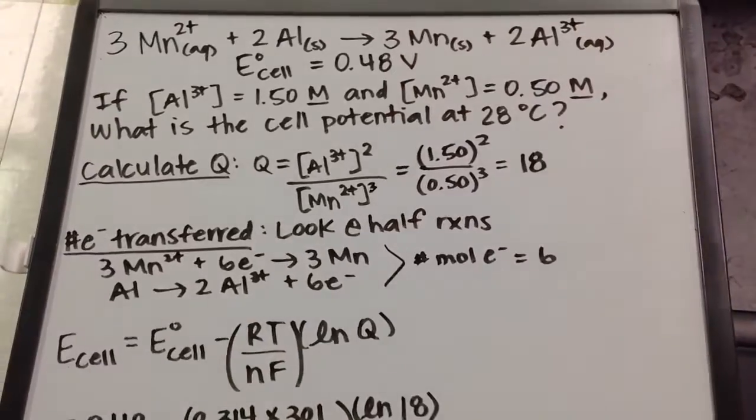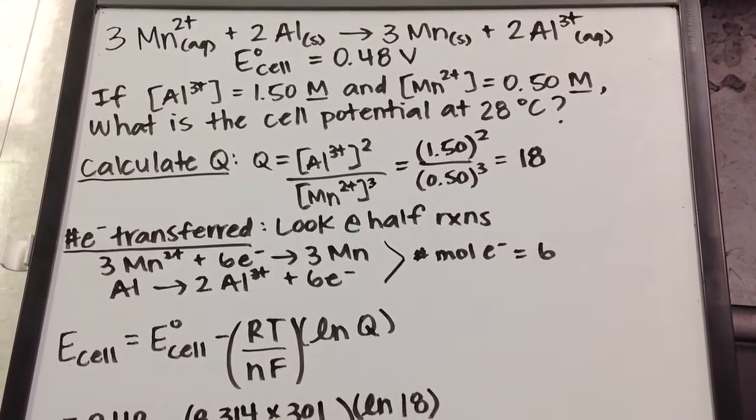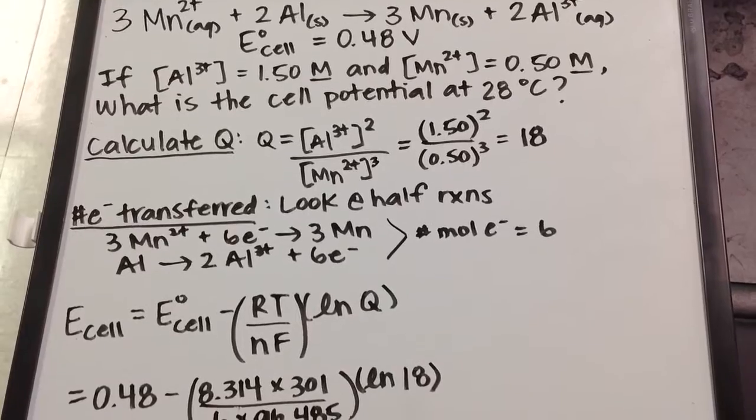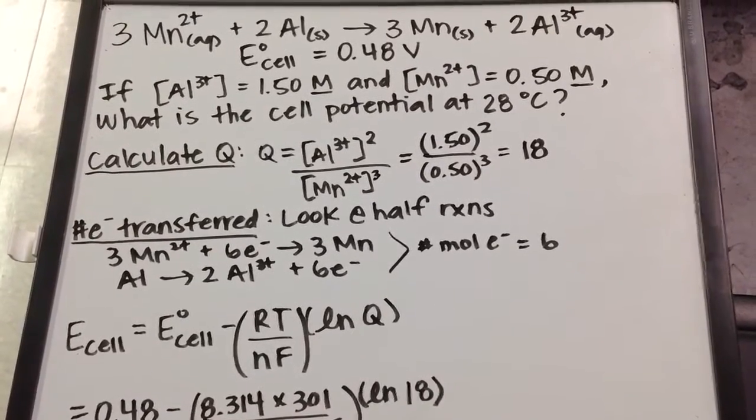If we're at any concentration other than 1 molar and any temperature other than 25 degrees Celsius, we have to calculate what E-cell is under non-standard conditions.